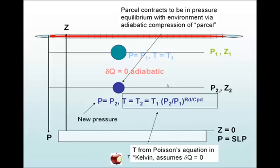So what happens here is, as the parcel descends, it encounters a larger environmental pressure and so it must contract. We get adiabatic compression of the parcel. So the environment's doing work on the parcel to raise its internal energy and increase its temperature.